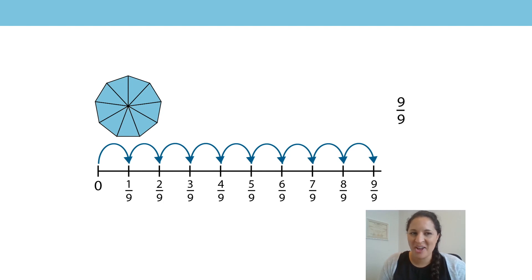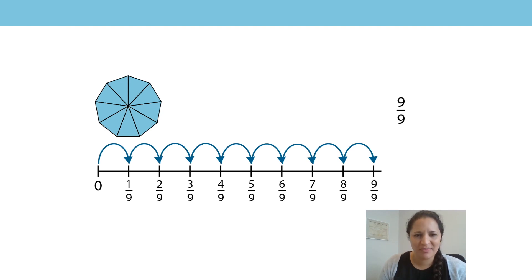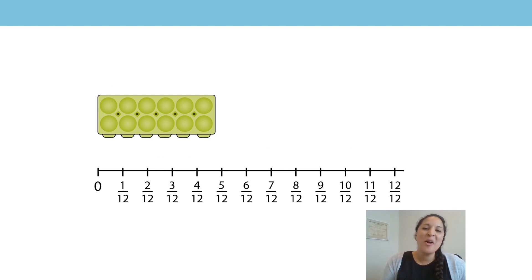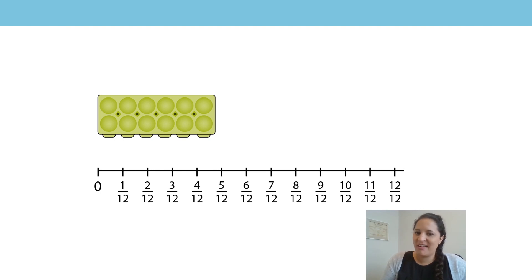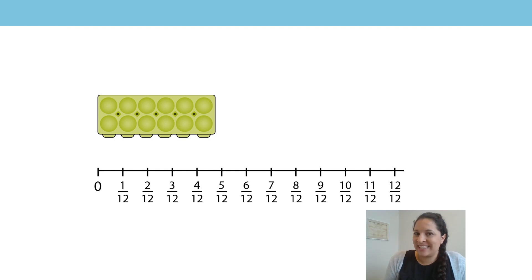Well done for counting along at home. Can you spot the number four-ninths on your number line? Can you point to where it is? Where would you point to? Well done if you are pointing to this point here on the number line that shows four-ninths. Let's have a go at counting up and down with our eggs. How many equal parts has the egg box been divided into? How many equal parts are there on the number line? Well, they both have twelve equal parts. So our unit fraction is one-twelfth.